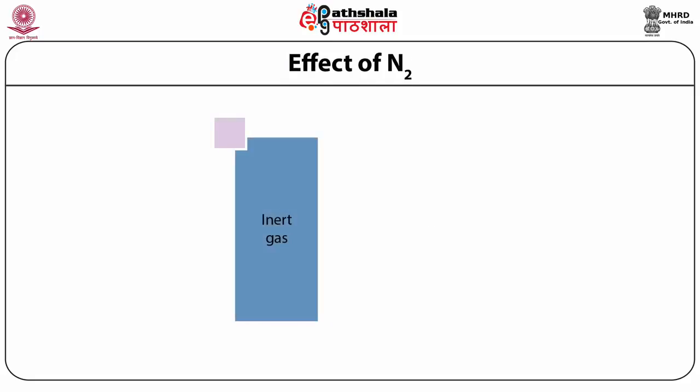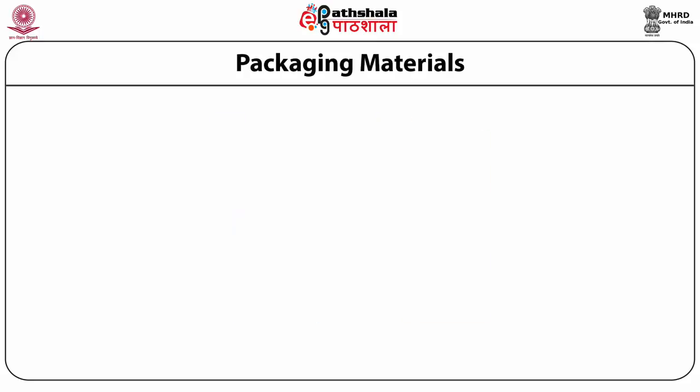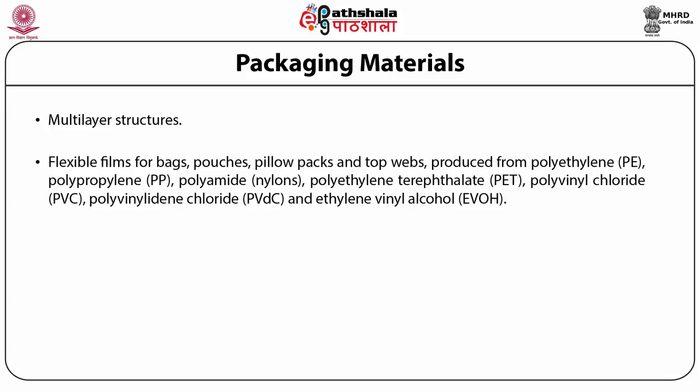Nitrogen is inert and has no direct effect on the chemical and biochemical properties of foods. Plastic packaging materials for MAP may consist of a single polymer, but most MAP films are multi-layer structures formed from several layers of different plastics. Packaging is most commonly found as flexible films for bags, pouches, pillow packs and top webs, or as rigid and semi-rigid structures for base trays, dishes, cups, and tubs. Commonly used flexible laminates are produced from polyethylene, polypropylene, polyamide or nylons, polyethylene terephthalate (PET), polyvinyl chloride (PVC), polyvinylidene chloride (PVDC), and ethylene vinyl alcohol (EVOH).